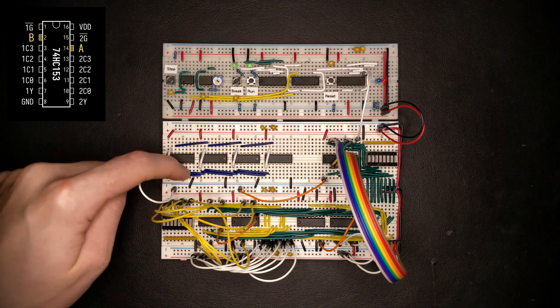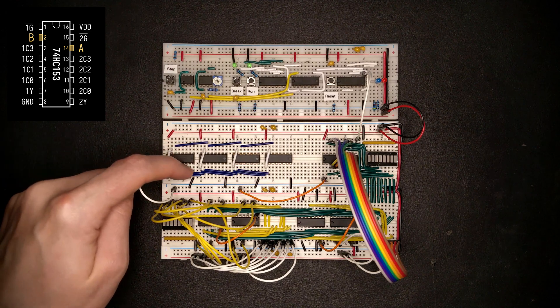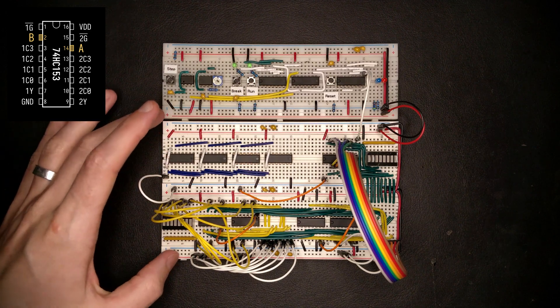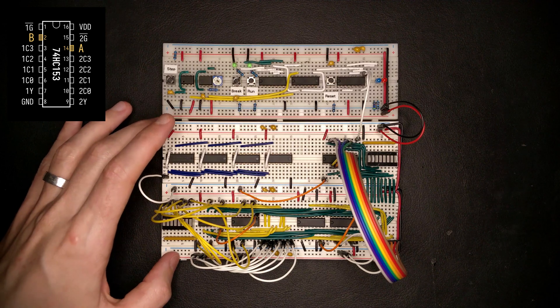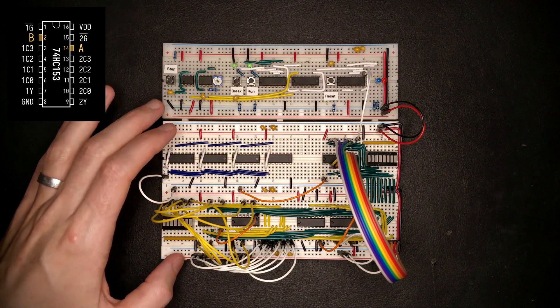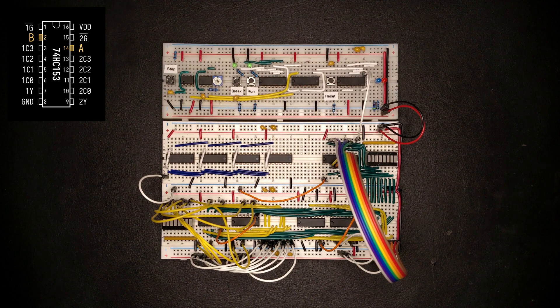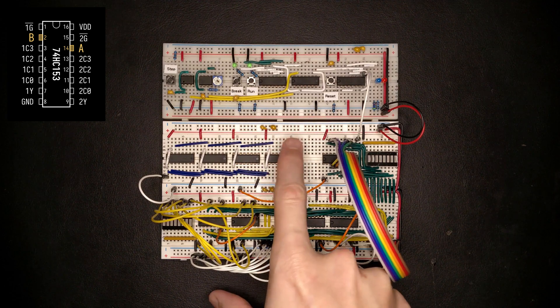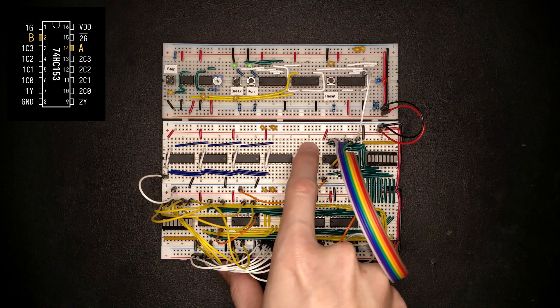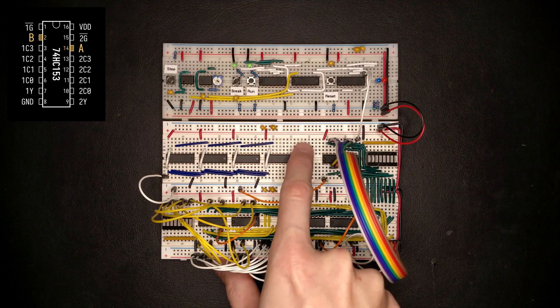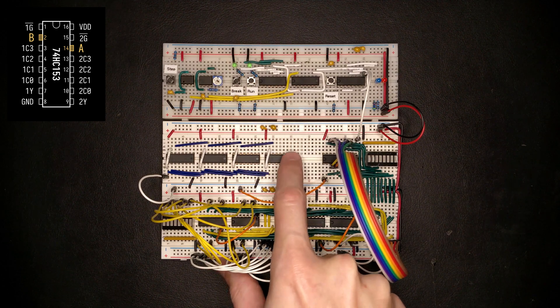Now these select lines, these will have to be driven from somewhere outside of this breadboard of this program counter. These might come from an instruction decoder or some other part of the CPU pipeline. So what I would like to do is actually bring those over here where we have easier access to them and we can use a very small DuPont cable to connect off the board.